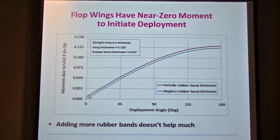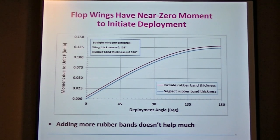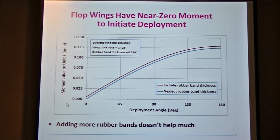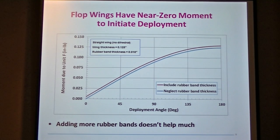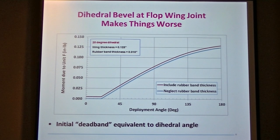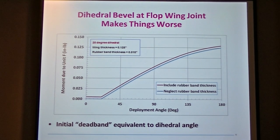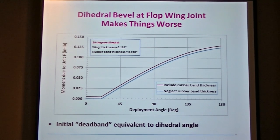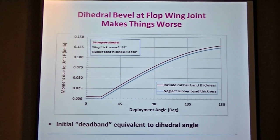Theory ignores actual thicknesses, but if you include the thickness of the rubber band, it actually provides a very small offset — a very small moment arm — so you get a tiny but nonzero moment. It's not very big, but it's there. Still, a basic plop wing has nearly zero moment to start deployment. And it gets worse: if you have dihedral in the hinge, you have essentially a zero-moment condition until you get far enough up to where the dihedral angle is reached. So a plop wing with dihedral at the plop joint is even worse. And that's exactly what I was flying at the world championship last year.